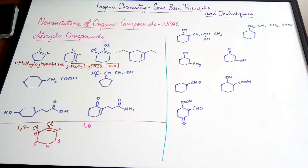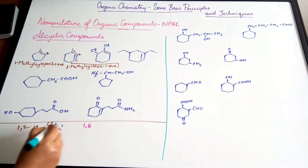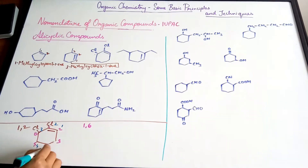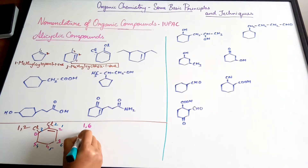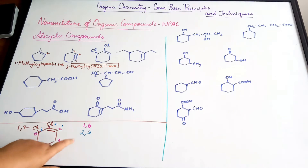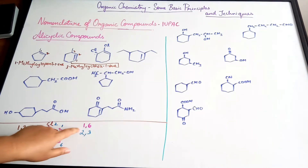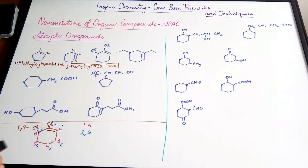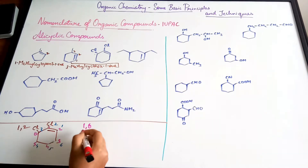If we numbered the ring the other way around — 1, 2, 3, 4, 5, 6 in the opposite direction — the chlorine atoms would be at positions two and three. Rationally, our first instinct might have been to name it 2,3-dichlorocyclohex-1-ene, but applying the first point of difference rule, two is higher than one.